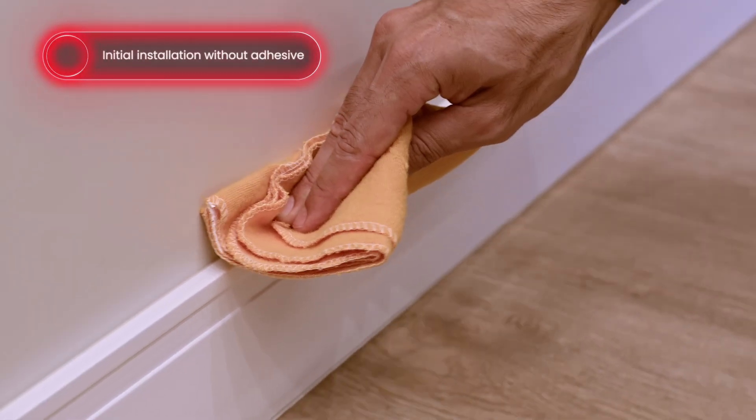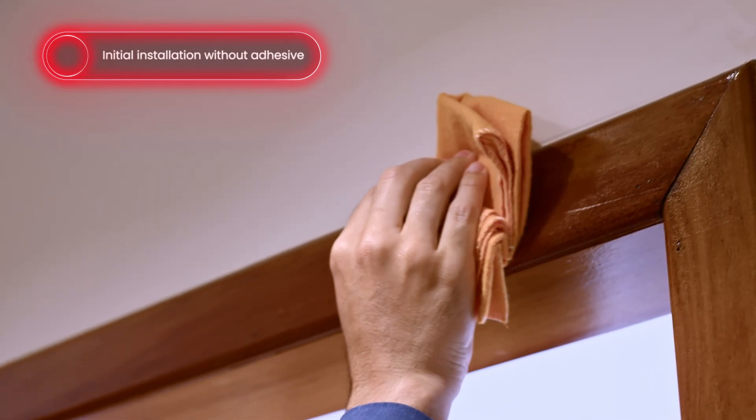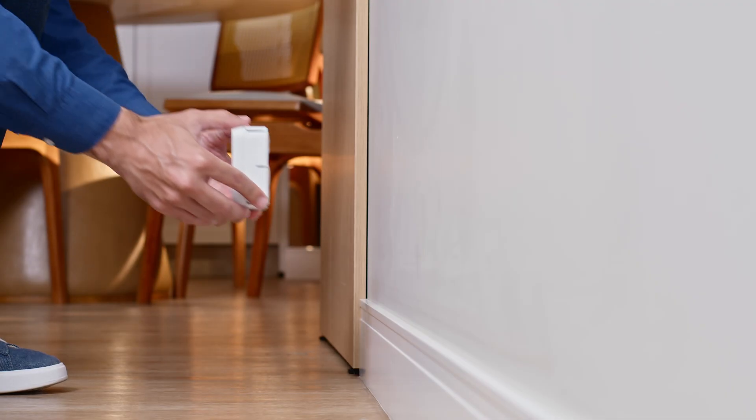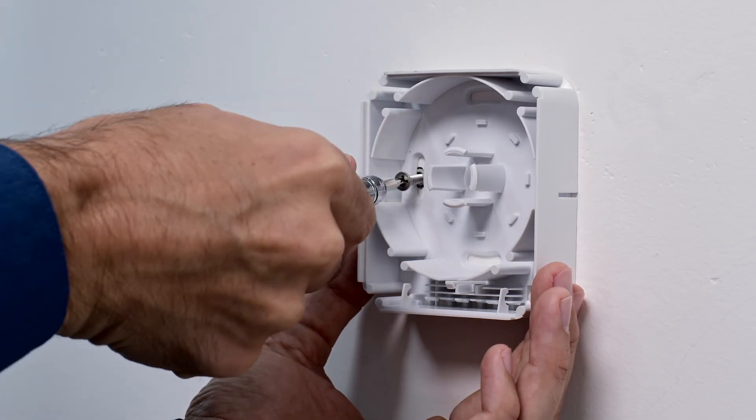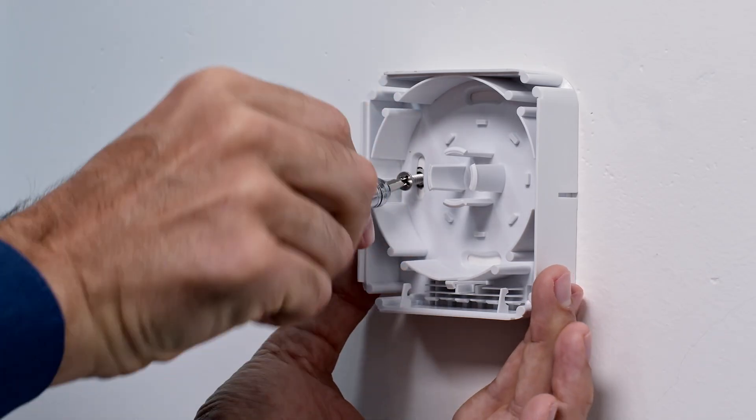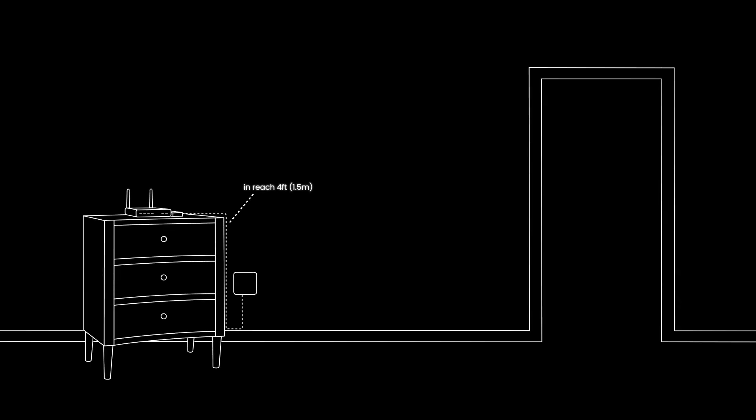Before installation, clean the path to remove dust and ensure it's completely dry. Be sure to check for wires or pipes before installing screws. Position the module so it's within reach of the media converter and near-end device. The ethernet cord is 4 feet, 1.5 meters.